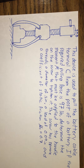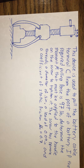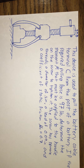This device is used to pull the battery cable terminal from the post of a battery. If the required pulling force is 97 pounds, determine the moment M that must be applied to the handle on the screw to tighten it. This screw has square threads, a diameter of 0.2 inches, a lead of 0.09 inches, and a coefficient of static friction of 0.7.